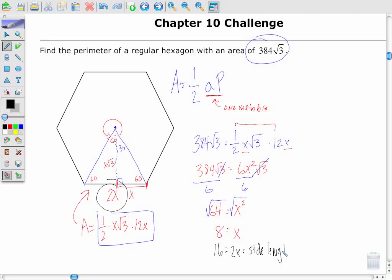And I check my problem again to make sure that I've satisfied what it wants me to do. It says find the perimeter of a regular hexagon, so I simply need to multiply that by 6. And 16 times 6 is 96, so the perimeter of my figure is equal to 96.